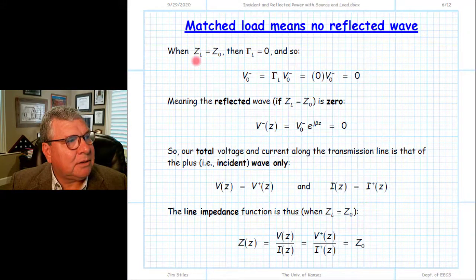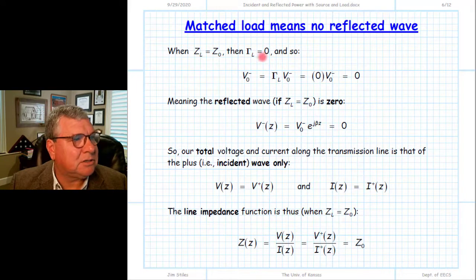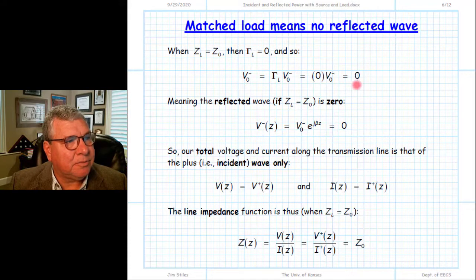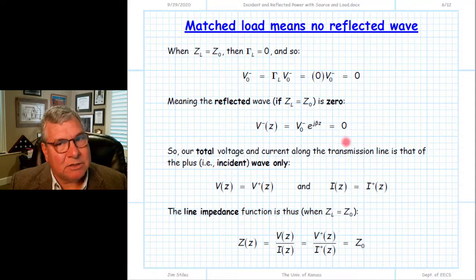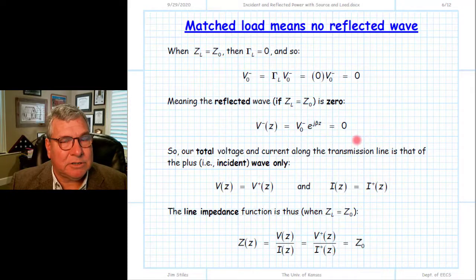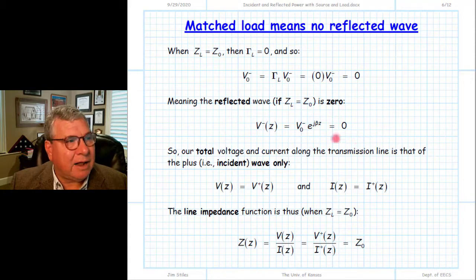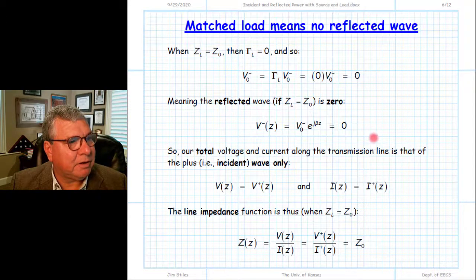If we have a matched load, the load reflection coefficient equals zero, so the complex wave amplitude V0- is equal to zero. Because of that, the minus voltage at every point on the transmission line is equal to zero. The reason is that there is no minus-going electromagnetic wave — that wave is the reflected wave. There's no power in that wave, and so it cannot create any current or voltage, as seen in the reflected voltage expression.